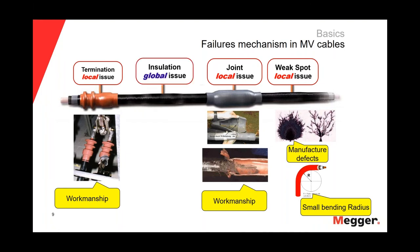On the other hand, we have global issues, which are related to the aging process of the insulation of our cables. They will be spread along all the cable — this is an aging condition of the insulation and will affect all the insulation of the cable. In the case of polymeric insulations, particularly XLPE insulation, the main reason for aging conditions is water tree degradation.